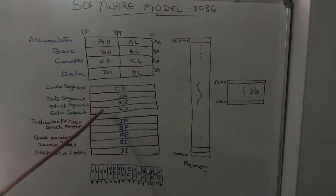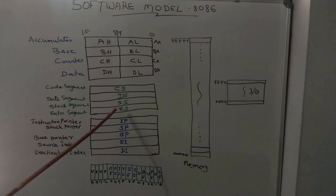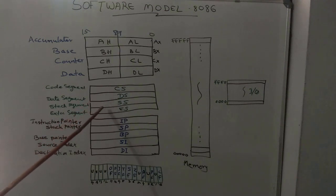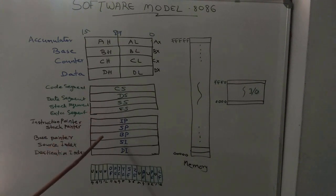8086 has 4 segment registers, meaning at a time an 8086 program can have a maximum of 4 segments. Each segment is 64 KB. These are all 16-bit registers.